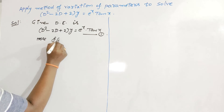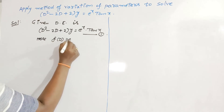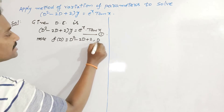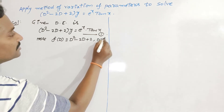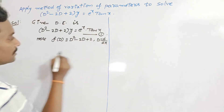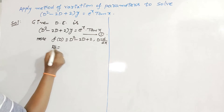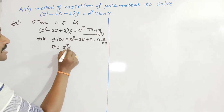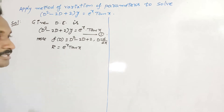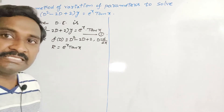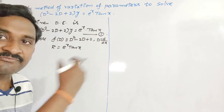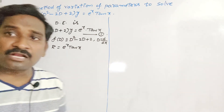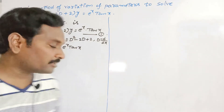Here, the function of D is D² - 2D + 2, where D is the derivative with respect to x. The right-hand side function is represented by capital R, which equals eˣ tan x. In the method of variation of parameters, the right-hand side function is always denoted by capital R. First we need to find the complementary function.